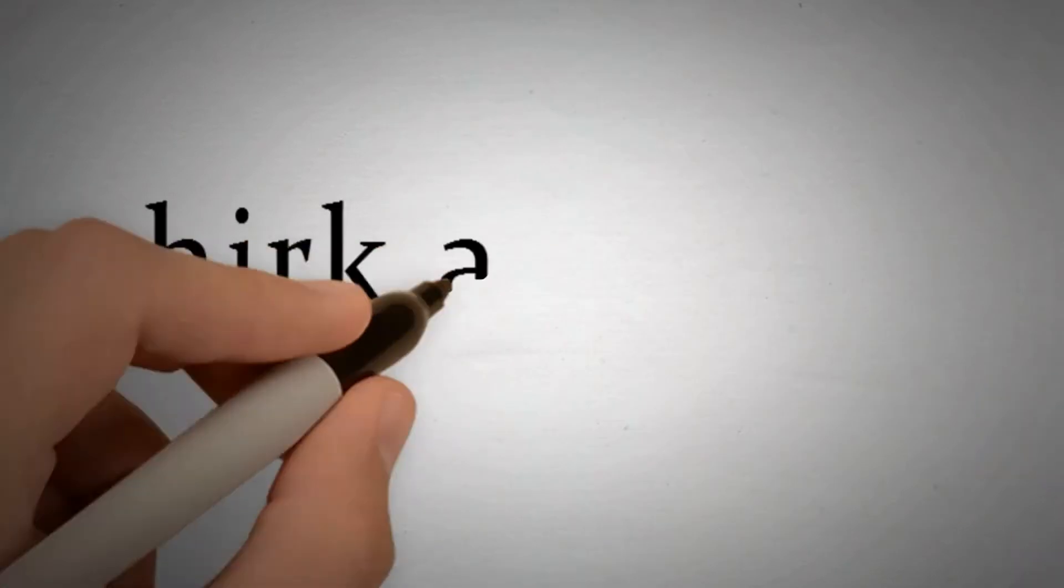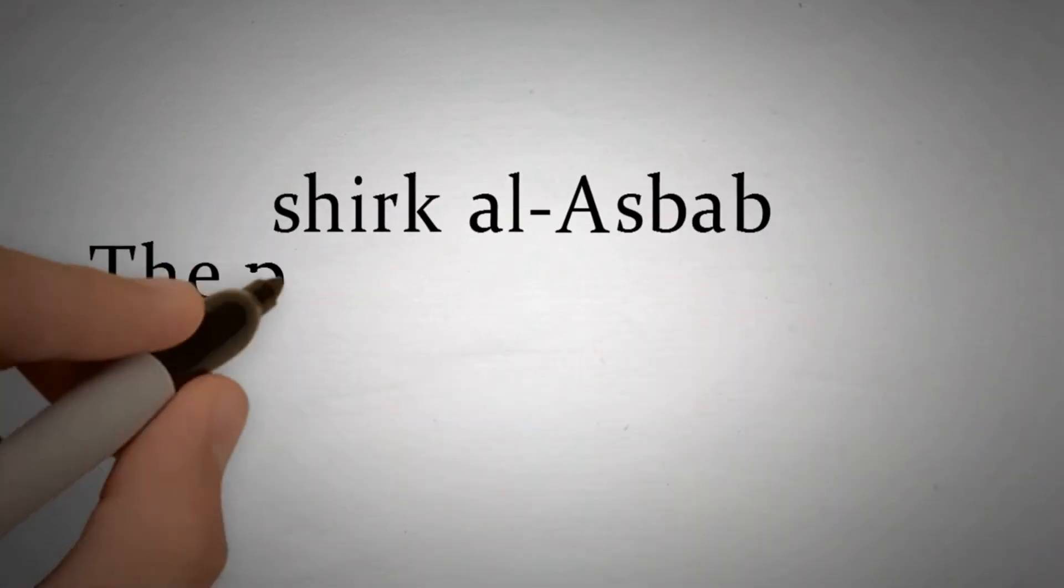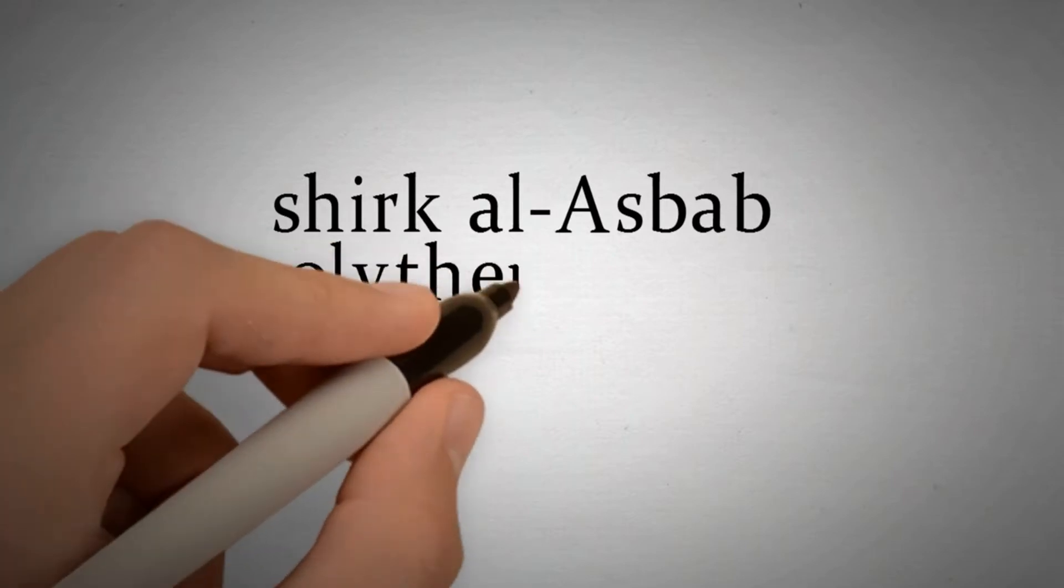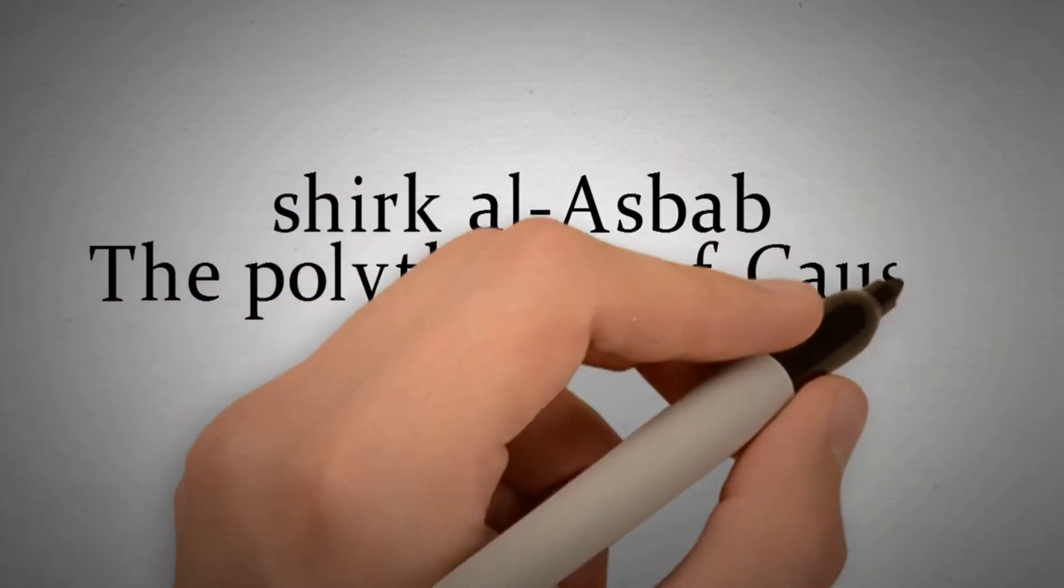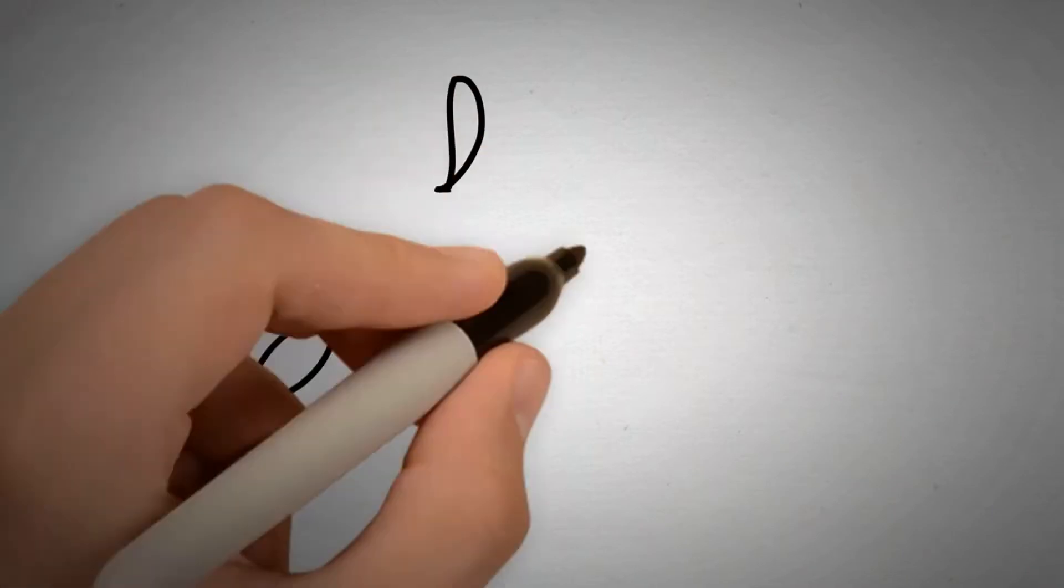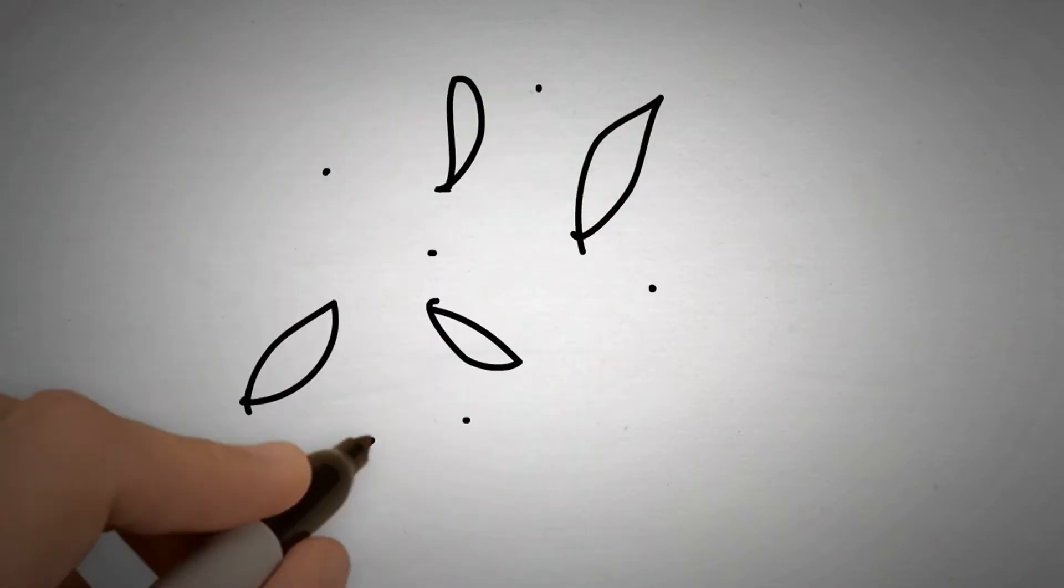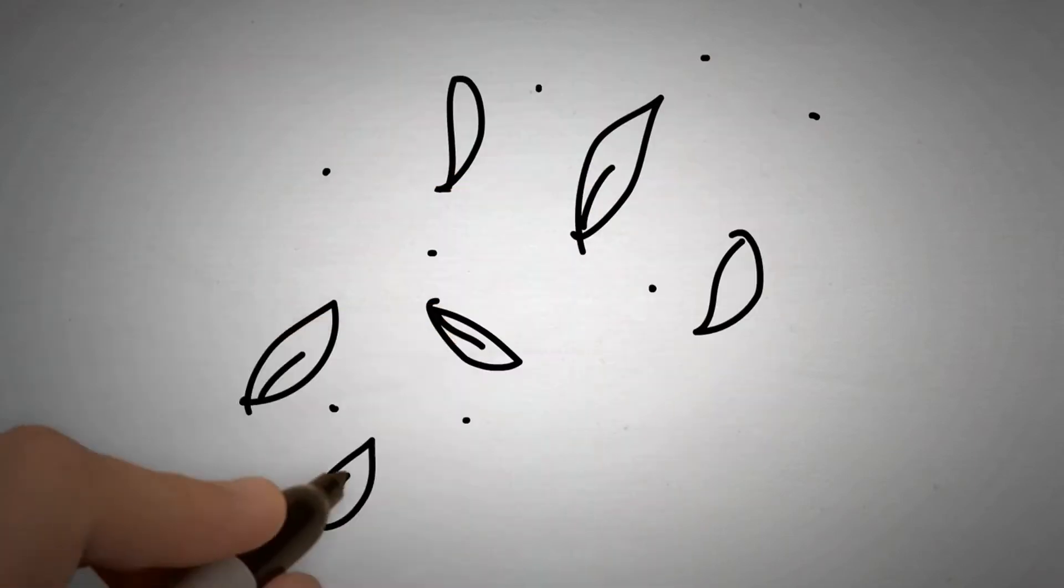And the second is shirk al-asbab, the polytheism of causes. We believe in an all-powerful deity, an all-knowing deity. No leaf falls but that it is known to him.